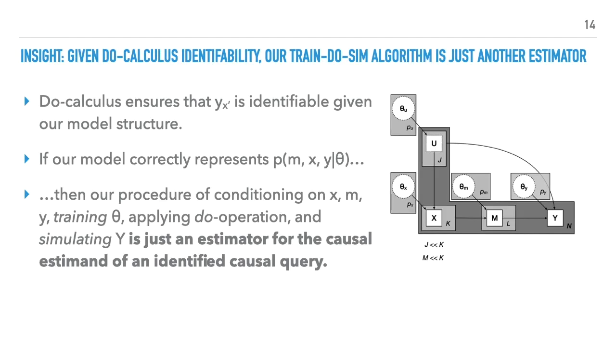Our key insight is this. So long as our model correctly represents the joint probability of the observed variables, then if we have do-calculus identifiability for a given causal query, our train theta, do-operation transformation simulation procedure is just another estimator for that causal query.